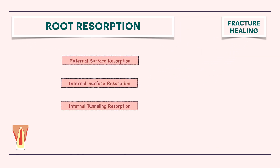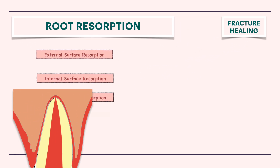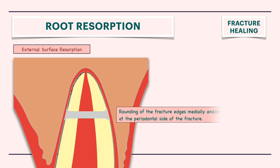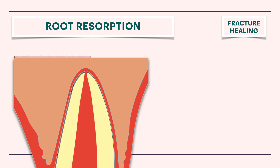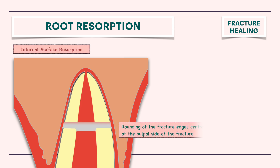Root resorption presents in three different forms. External surface resorption is characterized by rounding of the fracture edges at the periodontal side. Internal surface resorption is characterized by rounding of the fracture edges centrally at the pulpal side.